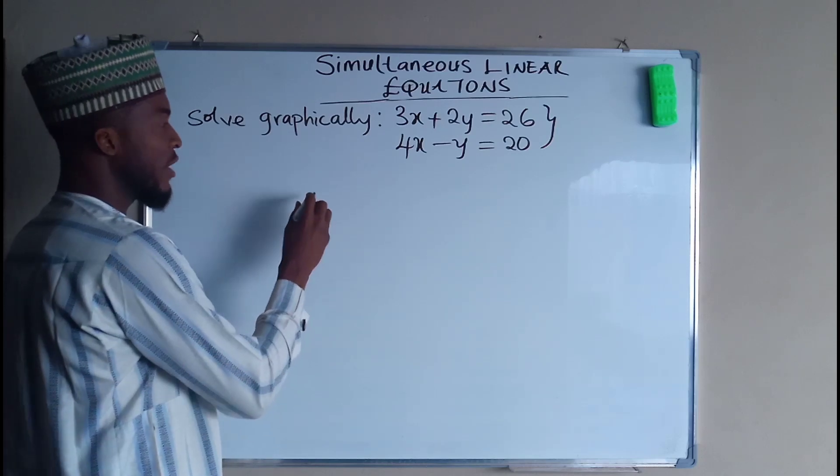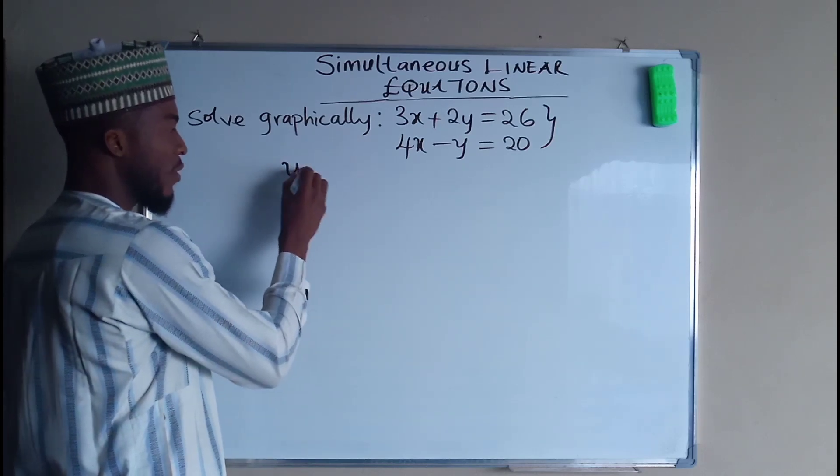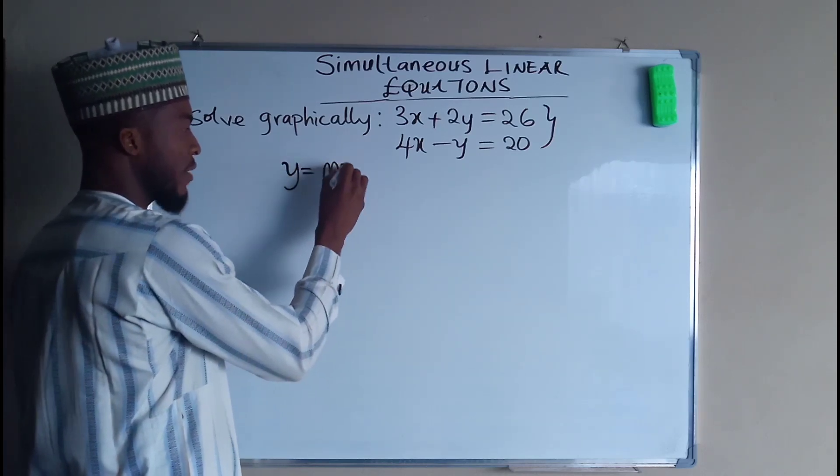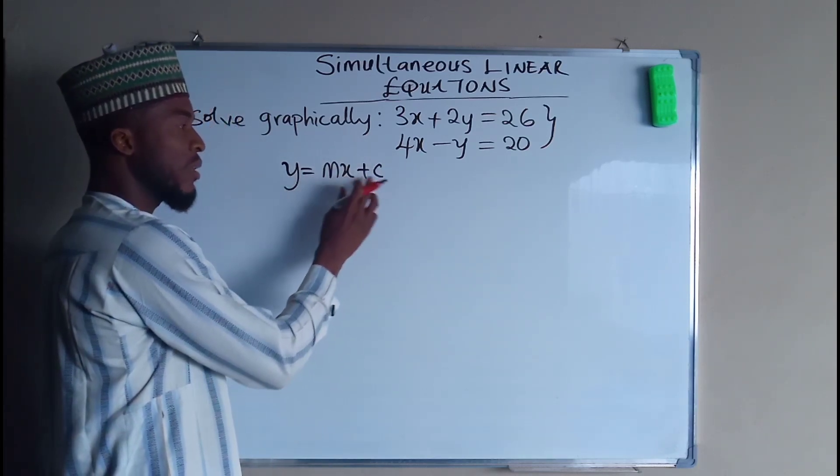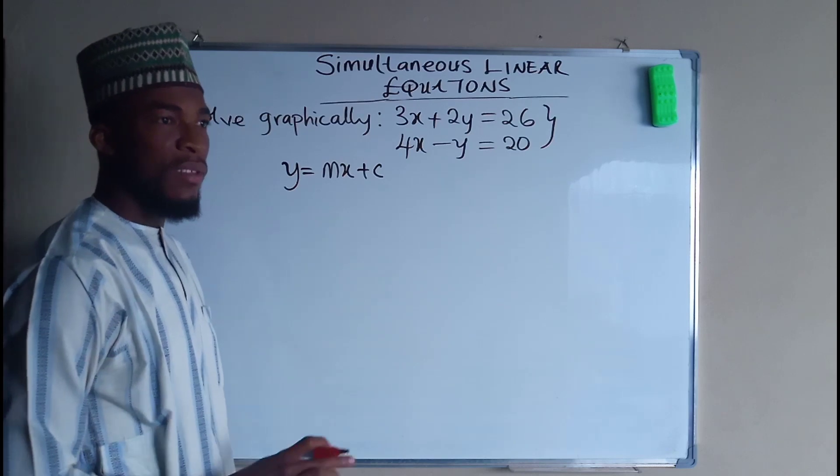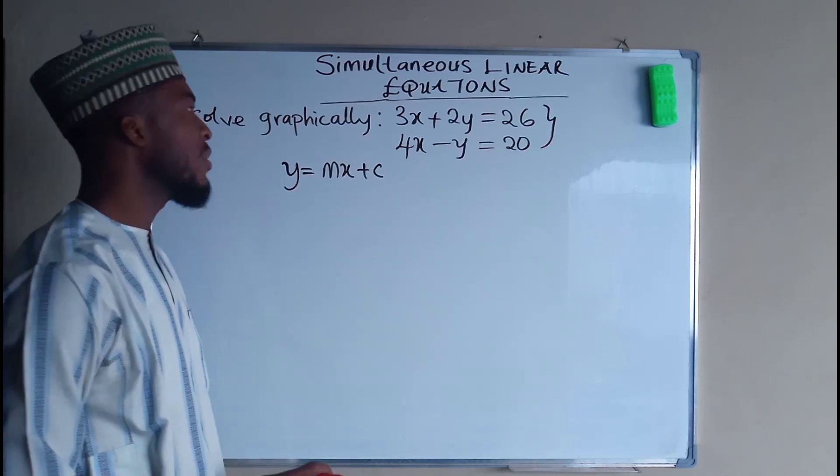Slope-intercept form of a linear equation is given as y equals mx plus c. Where m is the slope, c is the intercept. That is the value of y when x is set to be equal to 0.